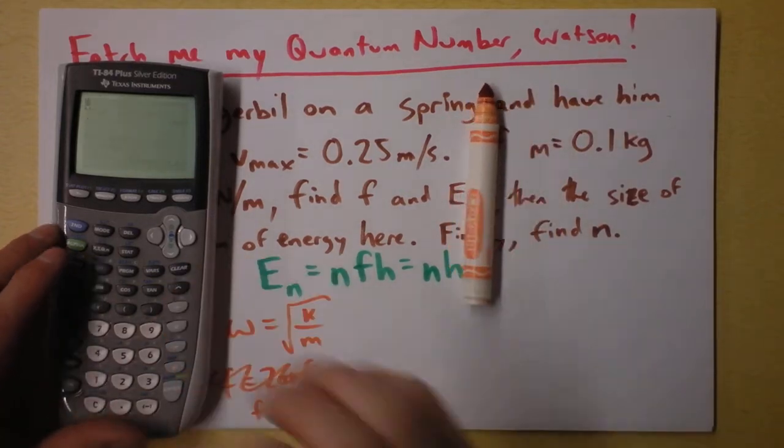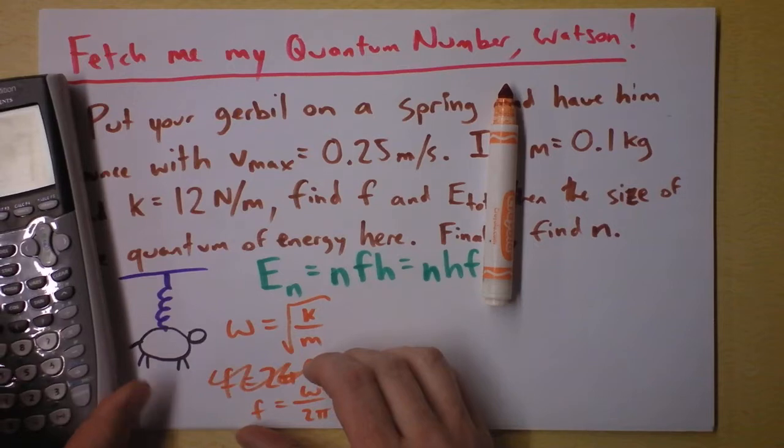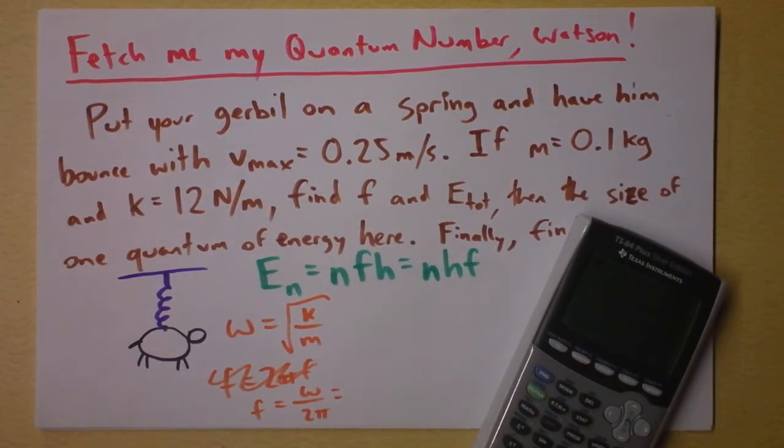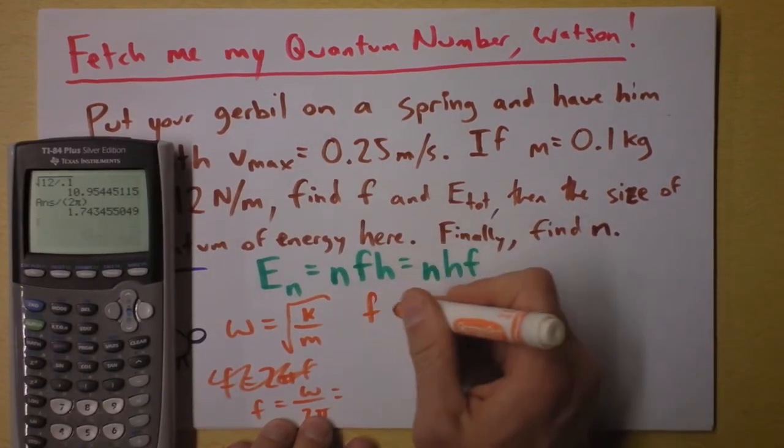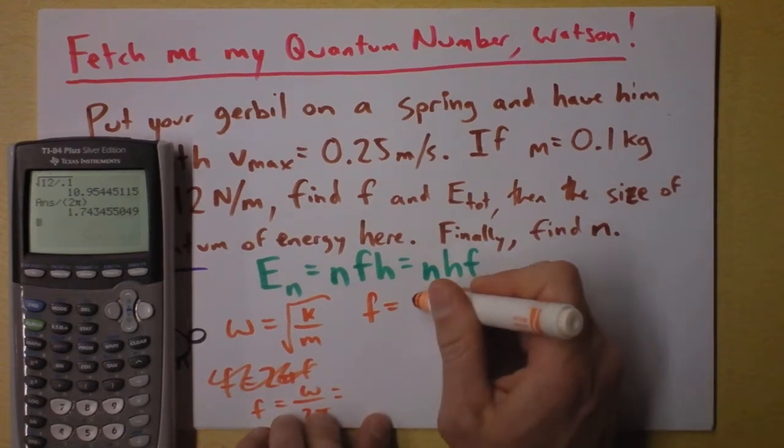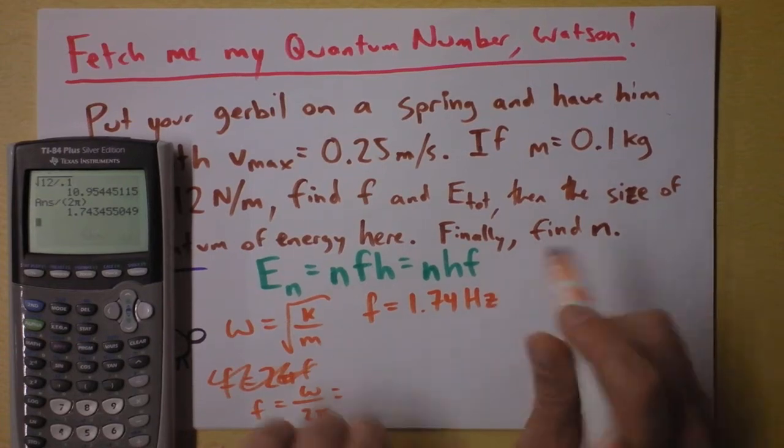My battery's low, shoot. I'm going to do the square root of K, which is 12, divided by the mass, which is 0.1. I'm going to close my parentheses. This fancy calculator doesn't even need parentheses closed. And then I'm planning to divide all that business by 2 pi. So I conclude that the frequency here - this is a happily oscillating gerbil - the frequency is 1.74 bounces per second.